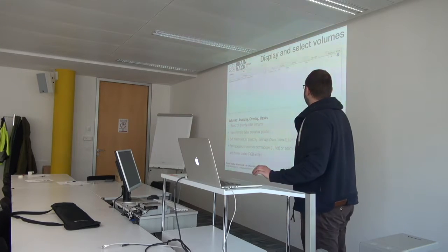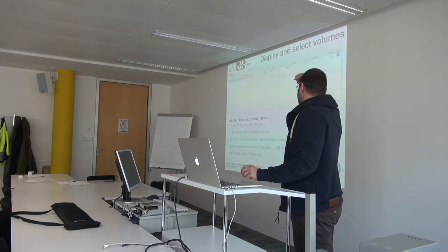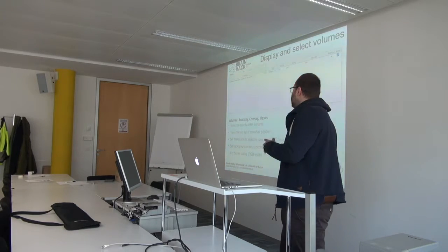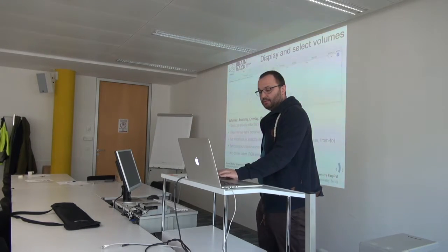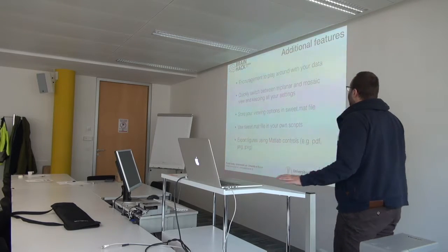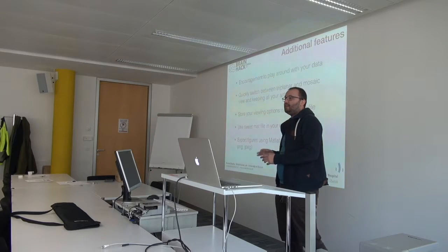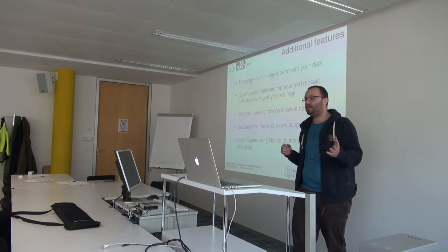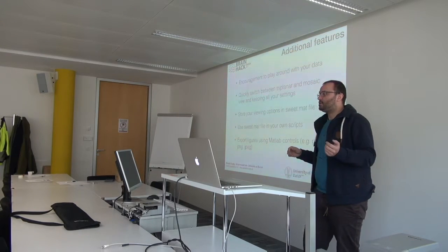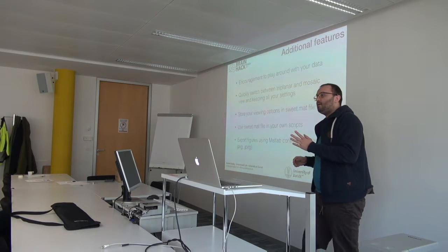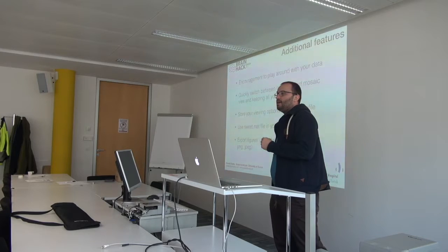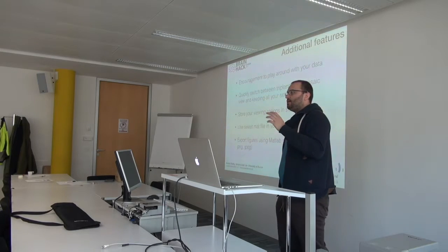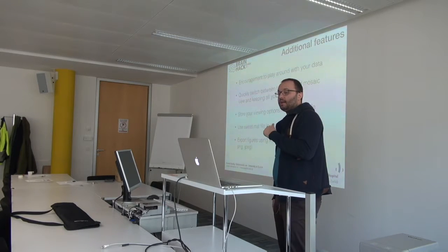For overlays you can set background colors using either a color map or a solid color — solid color makes sense for masks. You can also specify borders. The main idea is to encourage you to play around with your data quickly: change the threshold and see how it changes. For example, if you have FWE whole-brain corrected results and want to know what happens if you lower the threshold, or whether you can overlay different thresholds at the same time — yes, you can. That's the idea.